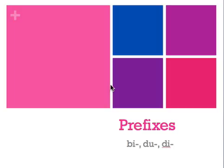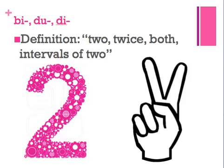Okay, now that you're relaxed, let's take a look at the three prefixes: bi-, du-, and di-. The good news is that all three of these prefixes have the same definition, which is two, twice, both, or intervals of two.